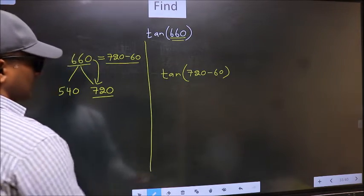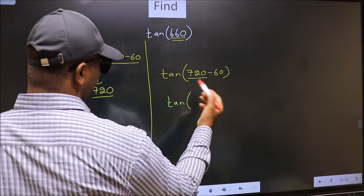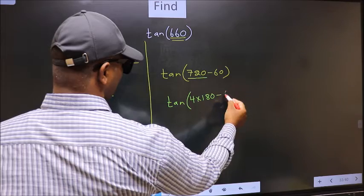Next, tan. In place of 720, now we should write 4 times 180, minus 60.